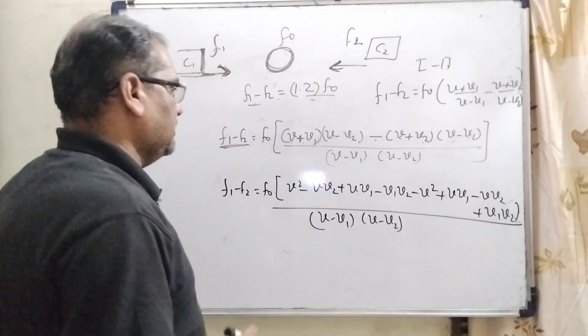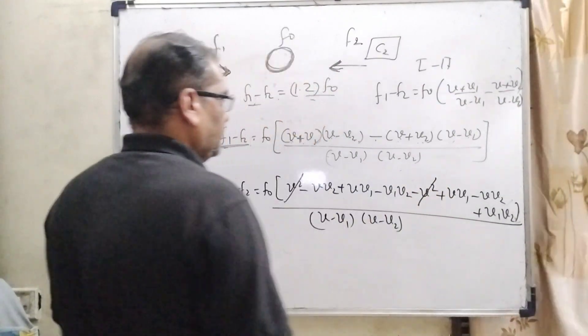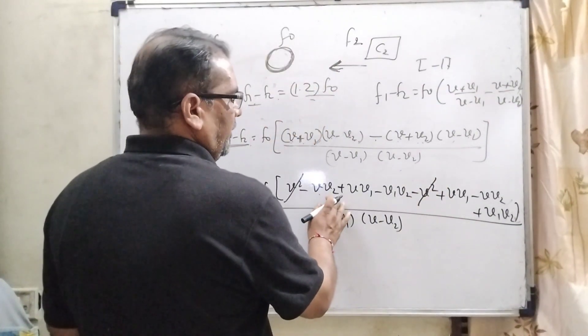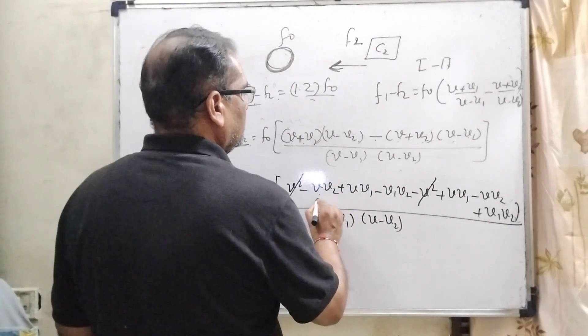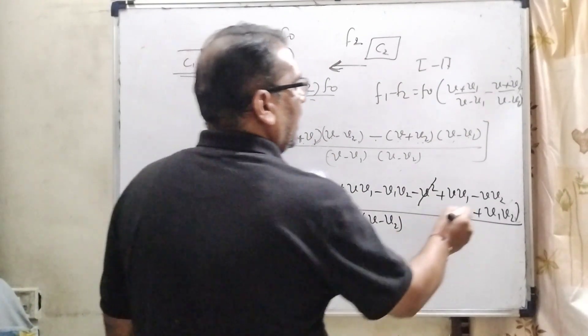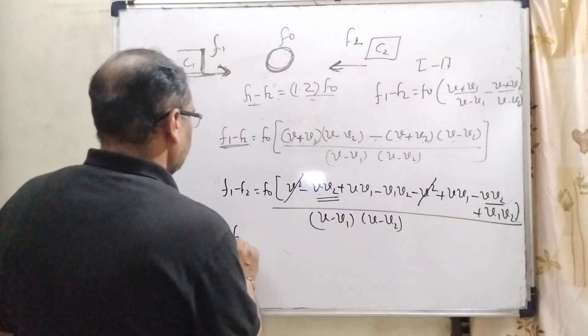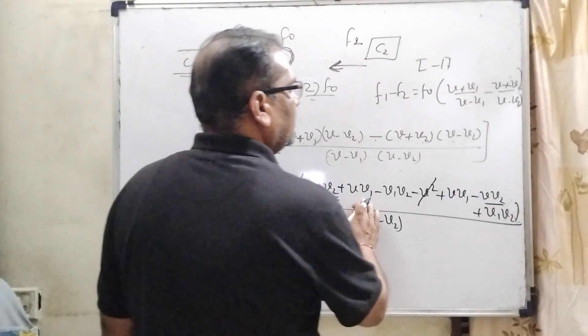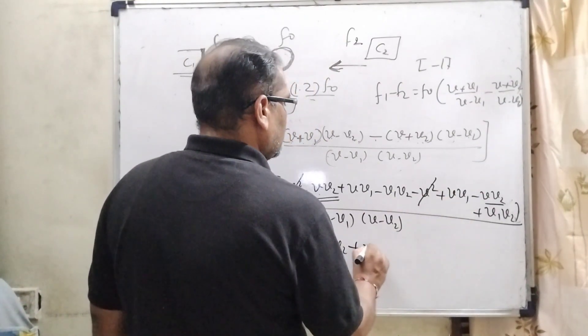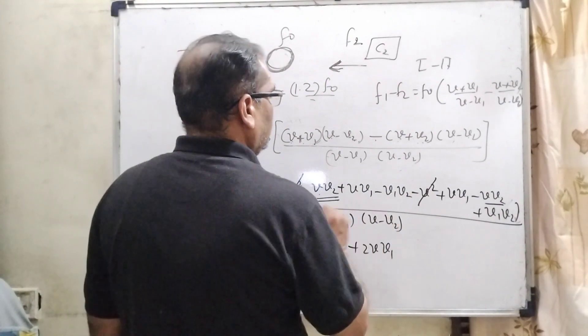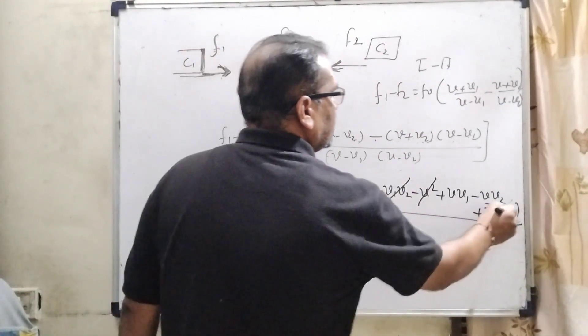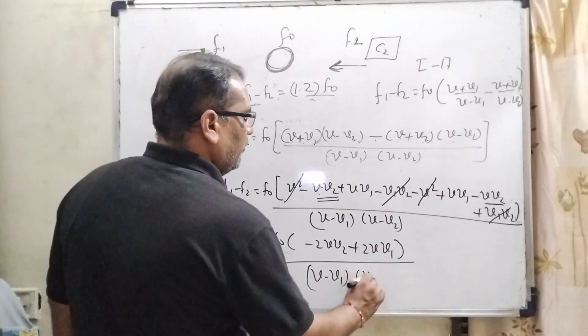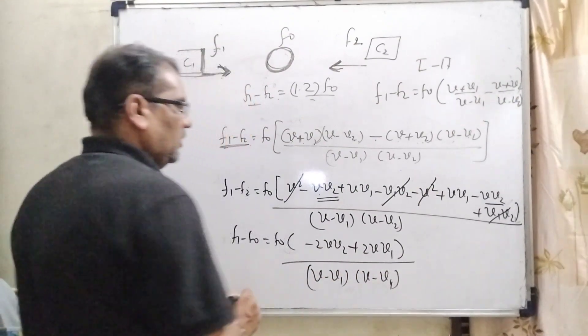Then we can see that V square V square cancel out here. V and V2, V and V2 two times, V1 and that is also two times V, V1 and here V1 V2 plus and minus cancel out. Then (V minus V1) times (V minus V2) upon (V plus V1) times (V plus V2).